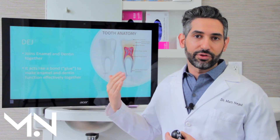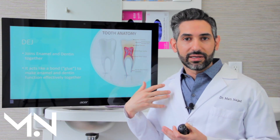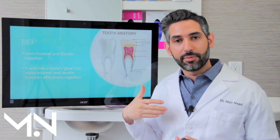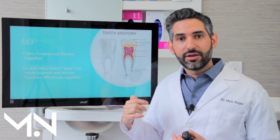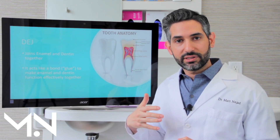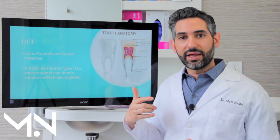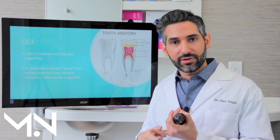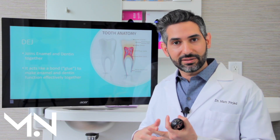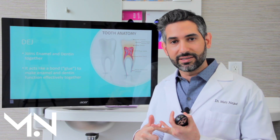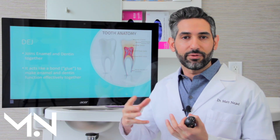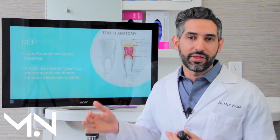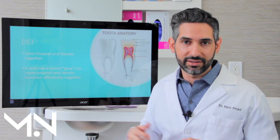So in biomimetic dentistry, we want to restore teeth in a way that replicates the strength of enamel, the flexibility of dentin, and that really strong glue or bond that holds everything together.